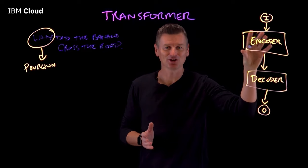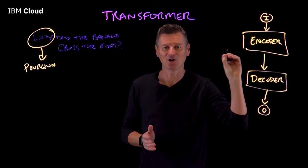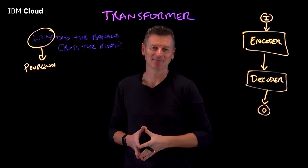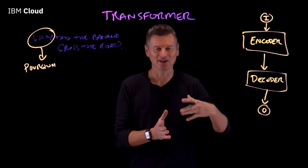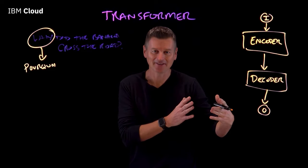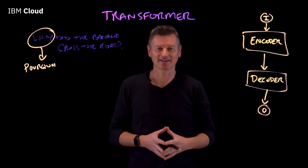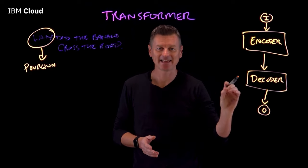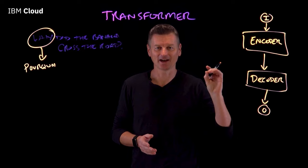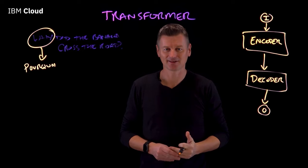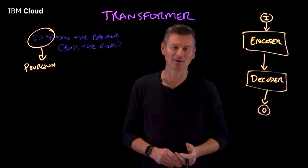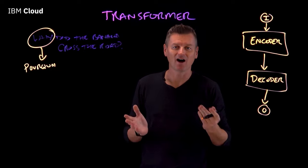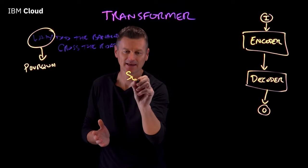It does this by iterating through encoder layers. The encoder generates encodings that define which parts of the input sequence are relevant to each other, and then passes these encodings to the next encoder layer. The decoder takes all of these encodings and uses their derived context to generate the output sequence.